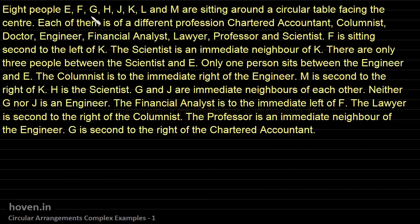Eight people — E, F, G, H, J, K, L, and M — are sitting around a circular table facing the center. Each of them is of a different profession. Professions such as chartered accountant and columnist are given to us, and we have to define the arrangement on the basis of the rules given.